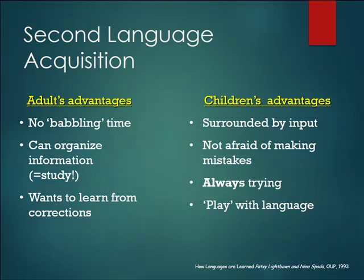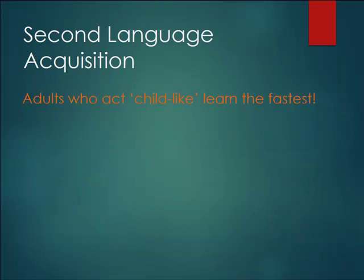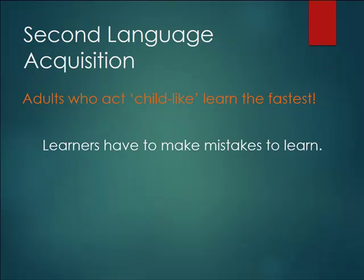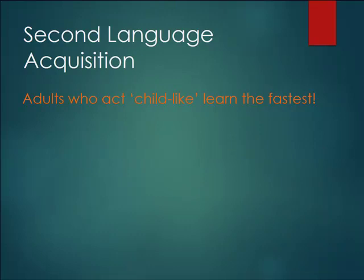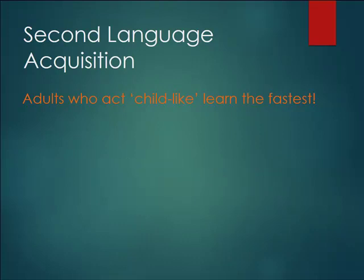Children say all kinds of extraordinary things and have fun with language — they get creative with it. It's possible that if adults can be equally playful and creative, they can learn very fast. But what if that's not you? Personality really comes in here. If you have to make mistakes to learn a language, what happens to adults who don't like making mistakes? Many of us don't like to look foolish. If you can learn from your mistakes and make a lot of them, you'll learn faster — that's the basic equation.